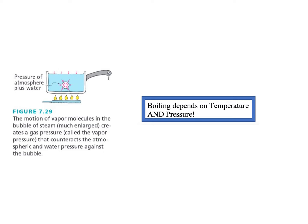Boiling depends on temperature, but it also depends on pressure. If you want to hard-boil an egg, if you live in the mountains of Colorado you have to boil them a little longer than if you live in New Orleans. At higher altitudes, atmospheric pressure is less, so there's less pressure pushing down. The bubble is able to balance the pressure of the water and the atmosphere at a lower temperature, because the pressure is less. Water in the mountains will boil at a lower temperature than water at sea level — that's why you have to cook the egg longer in the mountains.